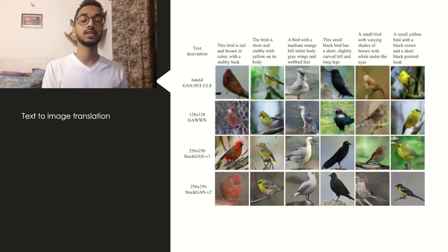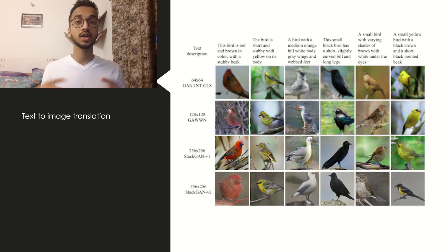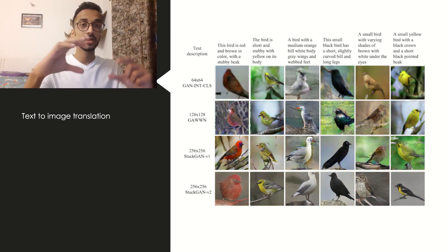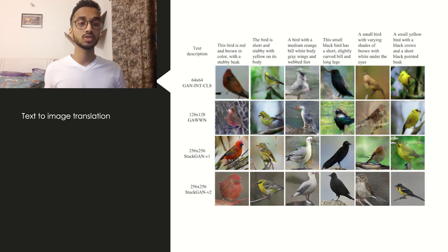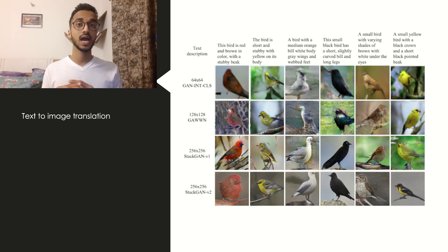Another example is text-to-image translation. Normal GANs convert data points from a distribution into images, and the same concept can be extended to convert text into images using a combination of natural language processing and computer vision. For example, you give it a text description like 'this bird is red and brown in color with a stubby beak,' and it extracts features — the word bird, red, brown, and stubby beak — and generates different images. The images across the column are generated by different GAN architectures. In future videos I'll show you how to build some of these applications using Python.